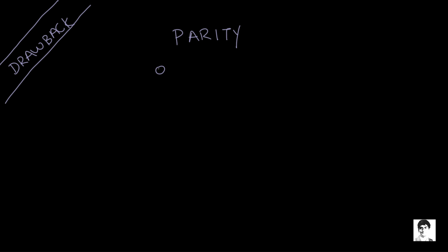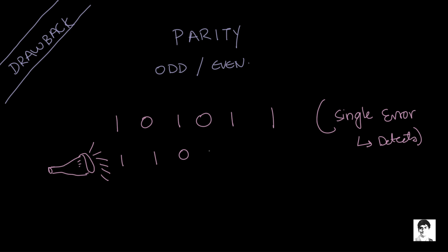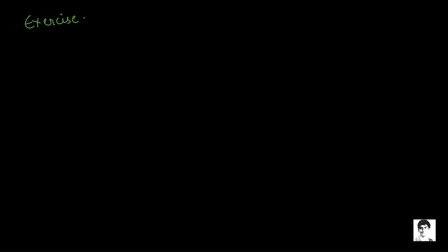What is the drawback of this error-detection code? The problem is that odd or even parity checks can only detect a single error in the transmission — meaning if a one changes into a zero, or a zero changes into a one, but only a single error. If multiple bits get altered simultaneously, this system fails.